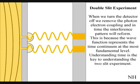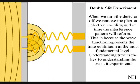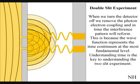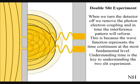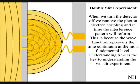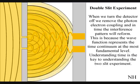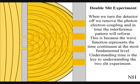When we turn the detector off, we remove the photon-electron coupling, and in time the interference pattern will reform. Understanding time is the key to understanding the two-slit experiment.